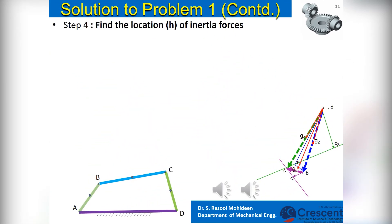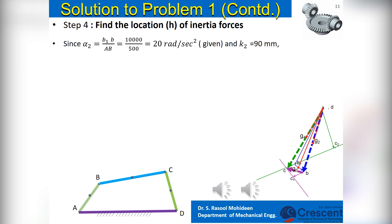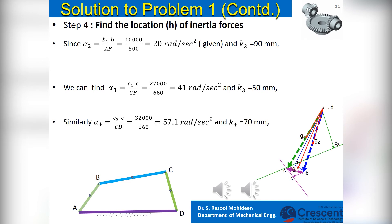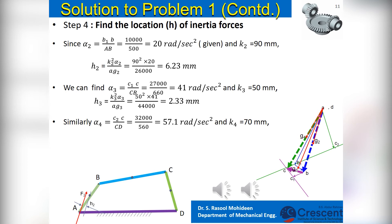Finally, in Step 4, we need to find the location of inertia forces. First we have to find the unknown angular accelerations from the tangential components. Alpha 3 is obtained by dividing the distance C1C — the tangential component of BC — by the link length BC. Similarly, alpha 4 is obtained by dividing C2C by the length CD. Then the offset position H of the inertia force is obtained using the formula H equals K squared into alpha divided by the respective absolute acceleration of G. The directions of inertia forces are parallel to the acceleration vector but in the opposite sense.